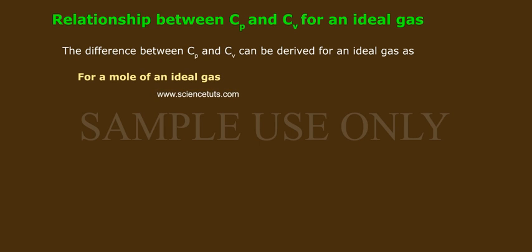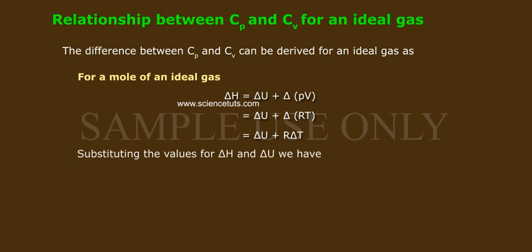For a mole of an ideal gas, delta H equals delta U plus delta PV, equals delta U plus delta RT, equals delta U plus R delta T. Substituting the values for delta H and delta U,